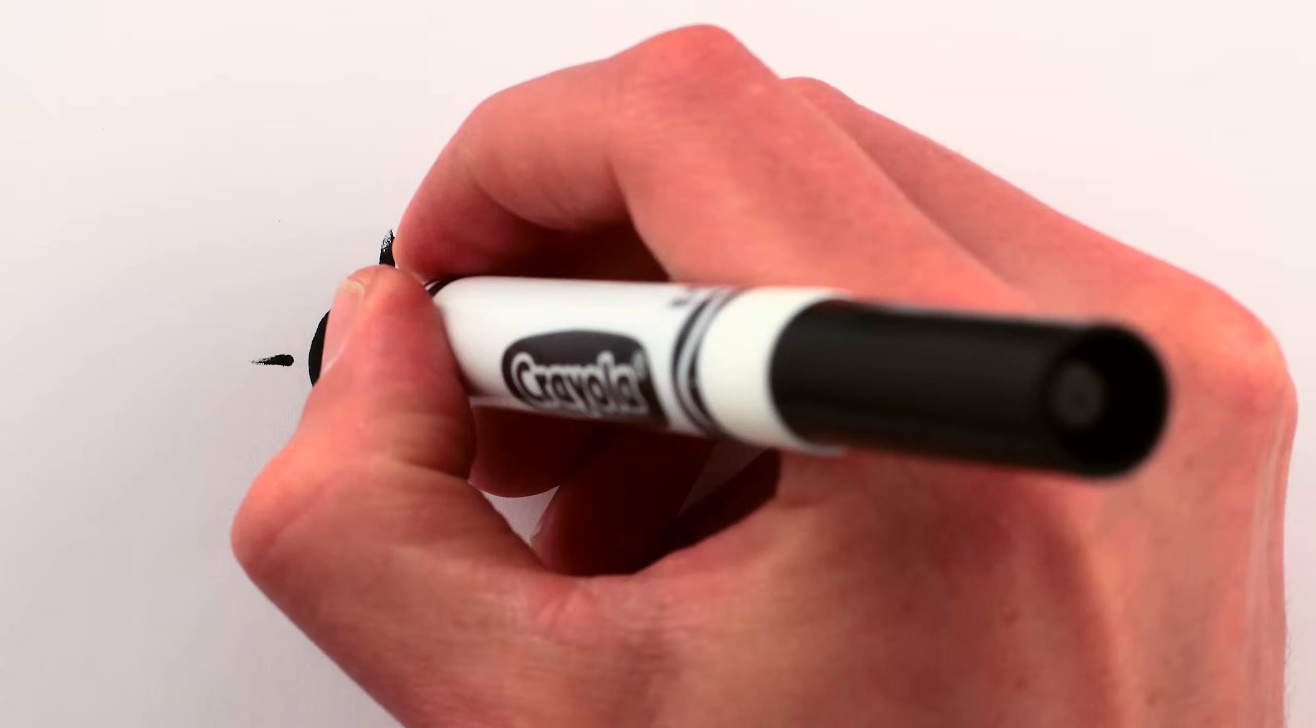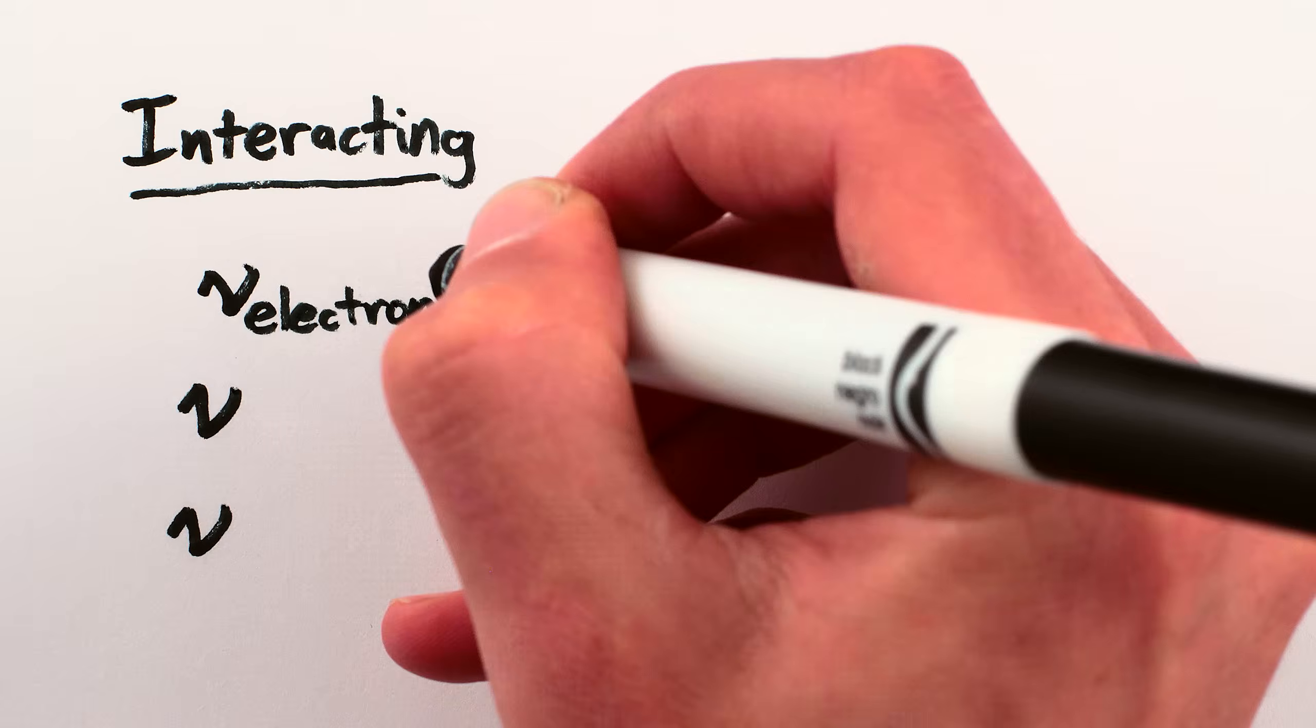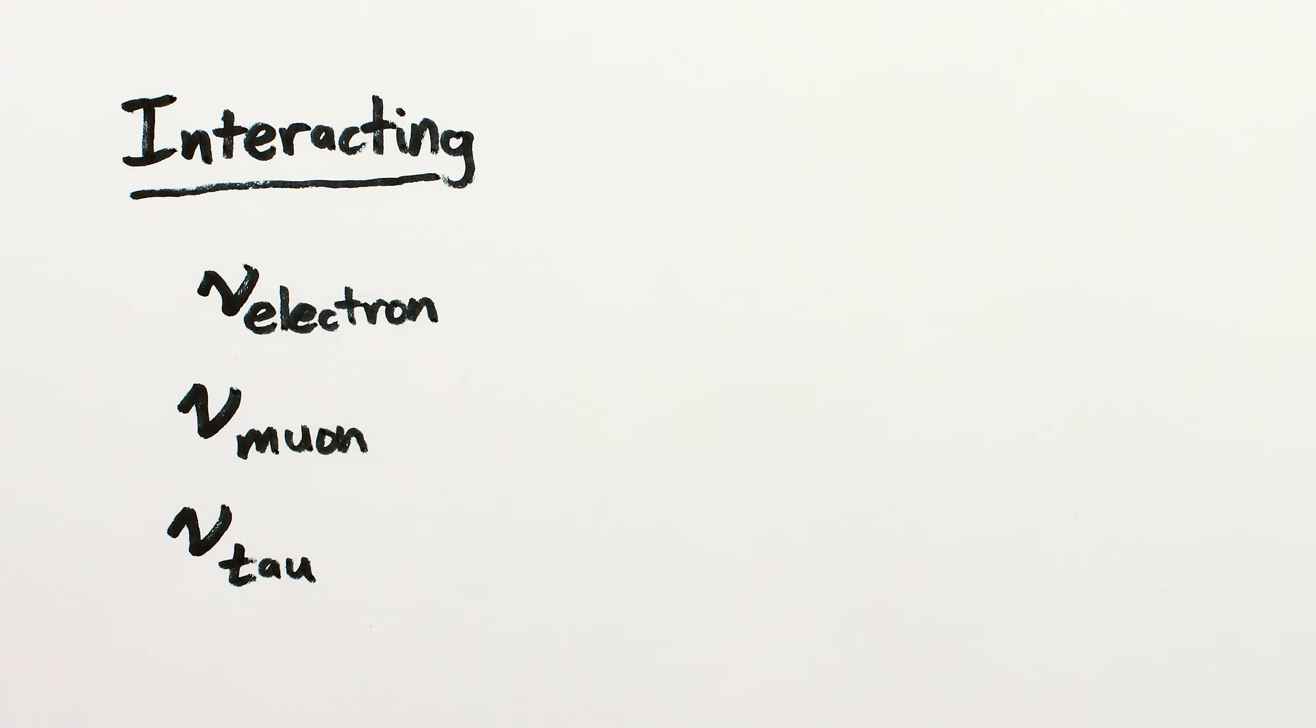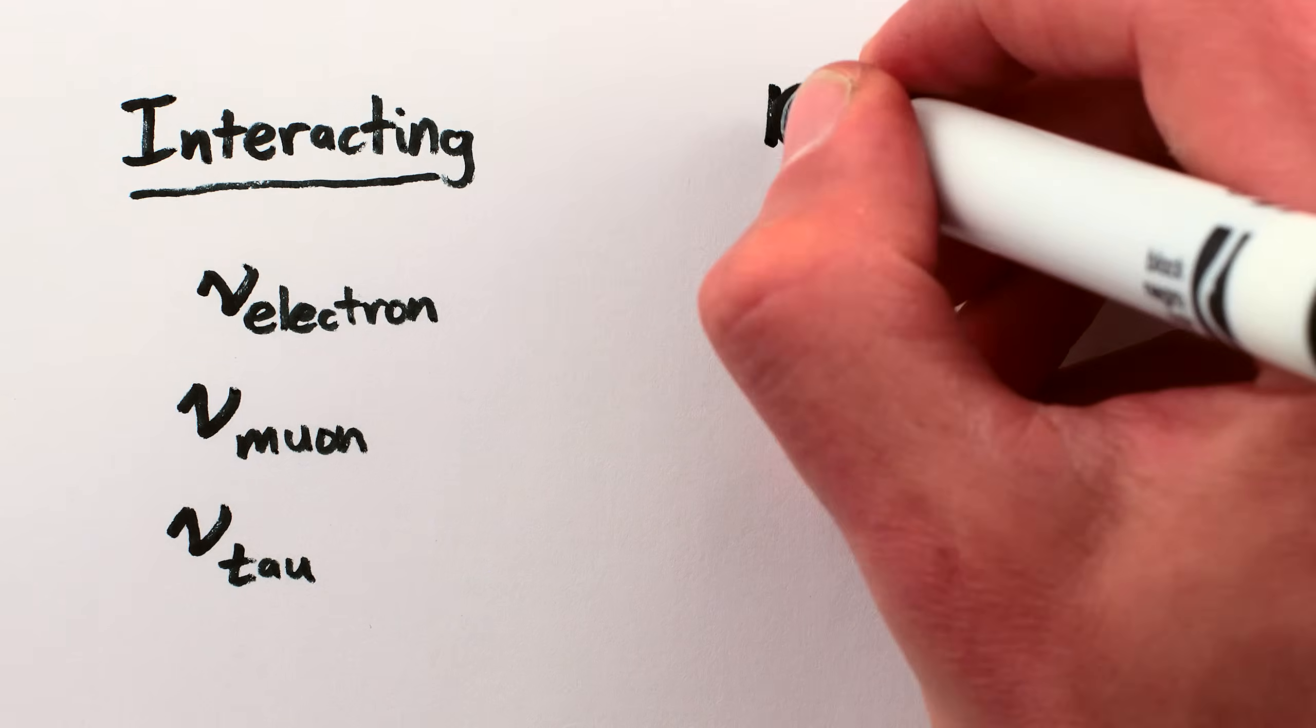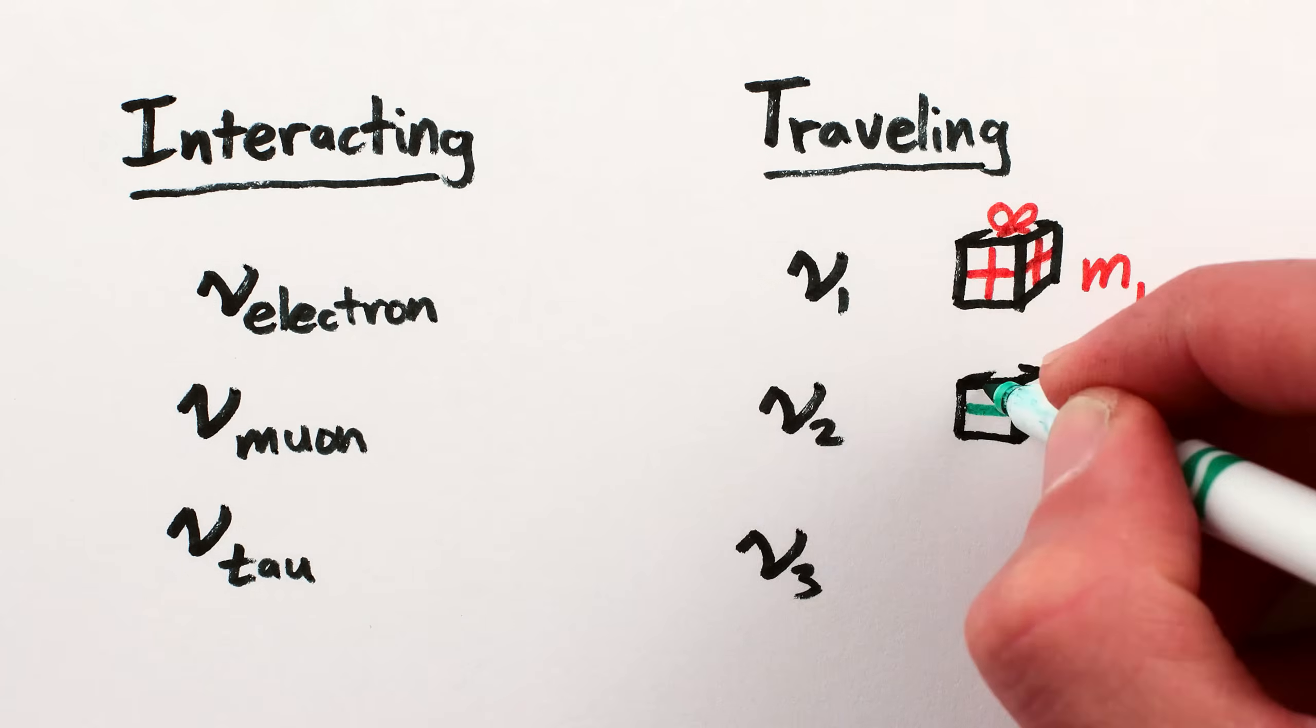Here's what I mean. When they interact with other particles, like when they're produced in fusion in the sun or in radioactive decay, there are three different kinds of neutrinos, characterized by the particles involved in their creation or annihilation. And when they're traveling through space, there are three different kinds of neutrinos, characterized by their masses.